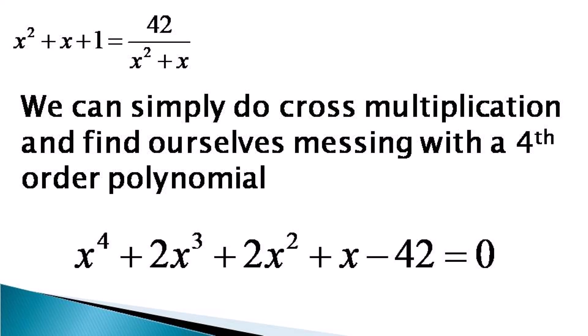The fourth order polynomial is given as x raised to the power 4 plus 2x cubed plus 2x squared plus x minus 42 is equal to 0.